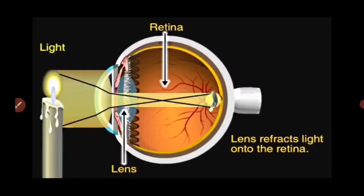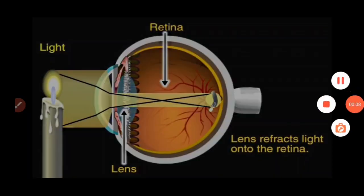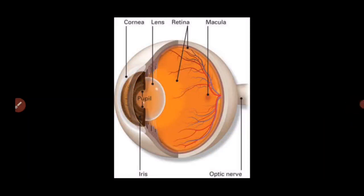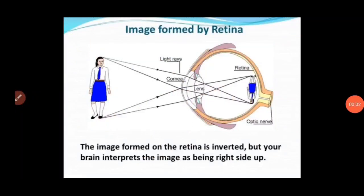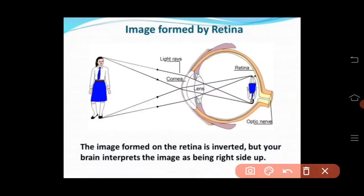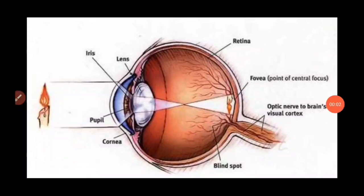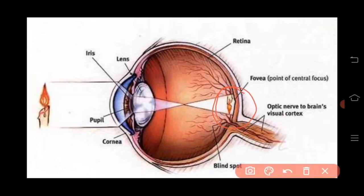Our next topic is the retina. The retina is the back surface of the eye and the most sensitive part. In this picture, the yellow-shaded portion at the back is known as the retina. The image formed on the retina is inverted — as shown in the picture, the image of a girl appears inverted — but your brain interprets the image as right-side up. Another example shows that a burning candle image also appears inverted on the retina surface.